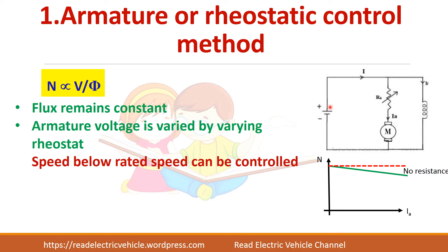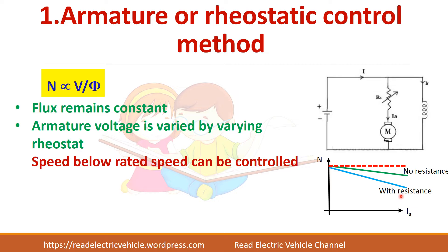Because fixed supply voltage is there, we are able to change this resistance and reduce the voltage to the armature, so you can achieve only speed control below rated speed. Without the rheostat you are getting a characteristics like this, and when you add a resistance your characteristics will shift because of the drop in resistance.